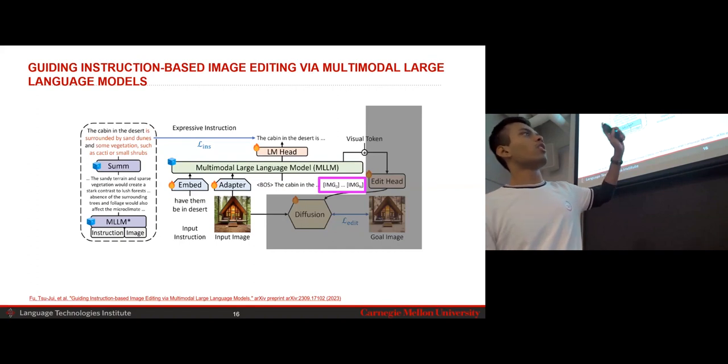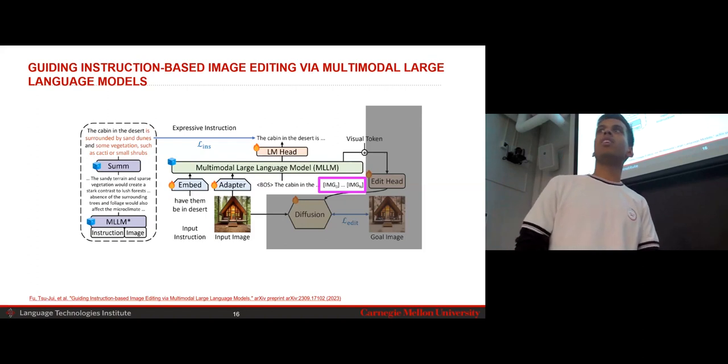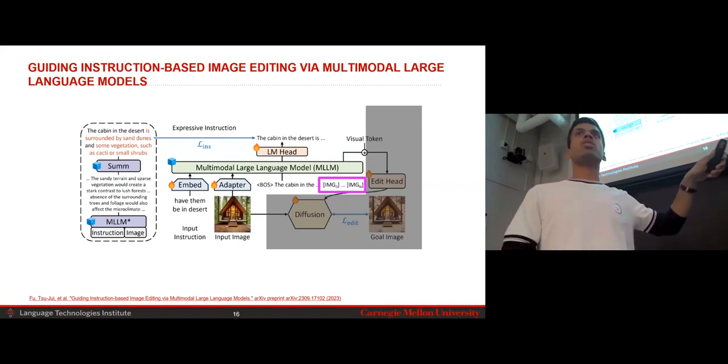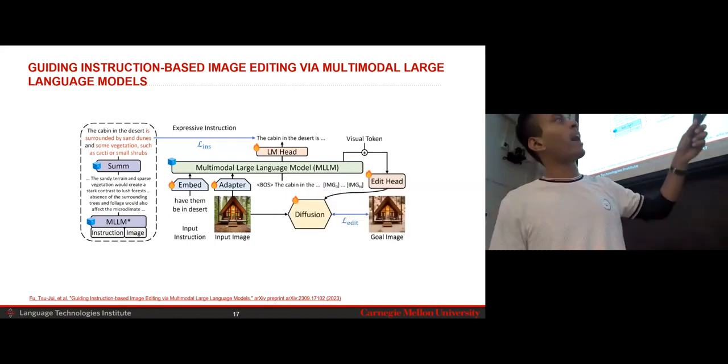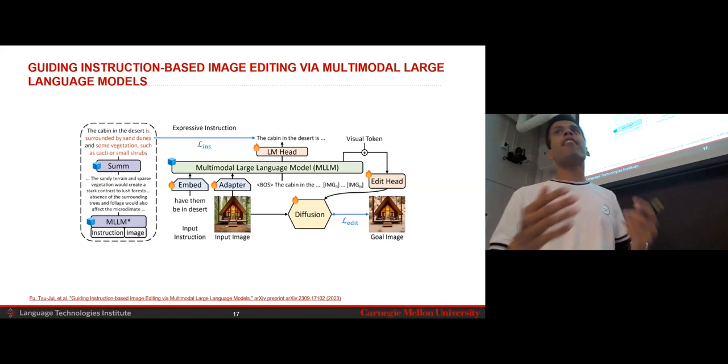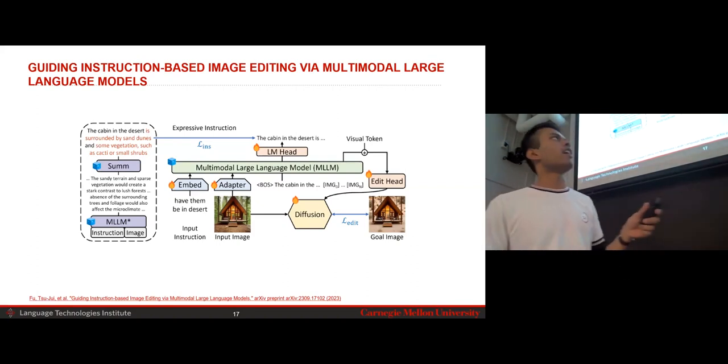So therefore, we provide this input, which is the cabin in desert is surrounded by sand dunes. We provide that as input to a final MLLM, which is essentially the same architecture. But what we're doing instead is that we're training it autoregressively, how you train a normal transformer architecture. So providing the input short instruction from the human, which is have them be in the desert and passing it through a trainable parameter embedding layer. We're also providing the input image and we're adding an adapter layer, which is one of the methods to fine tune MLLMs today. So passing that again through a trainable adapter layer. And as you can see, we also have provided the right most input, which is the beginning of sentence token, the cabin in the dot, dot, dot, and image tokens.